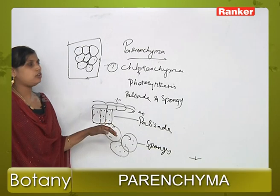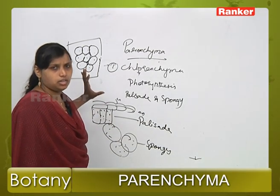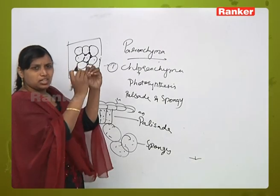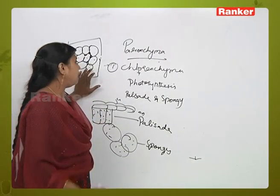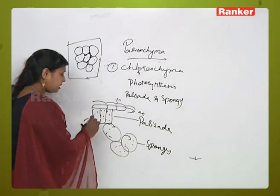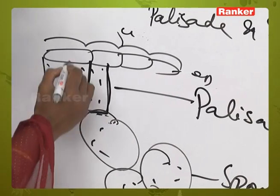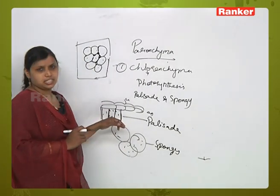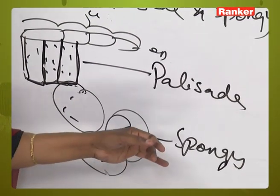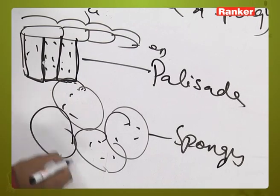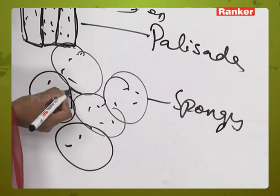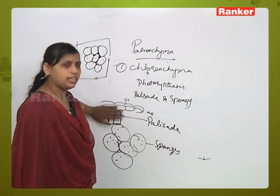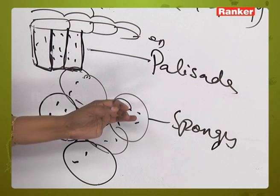In almost all dicots and monocots, the intercellular spaces are usually absent in the chlorenchyma of palisade tissue — the barrel-shaped cells are compactly arranged with no intercellular spaces. However, in spongy tissue, we can see the presence of intercellular spaces.